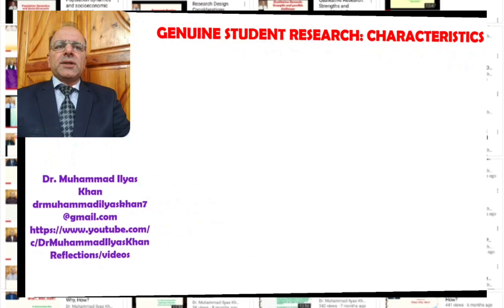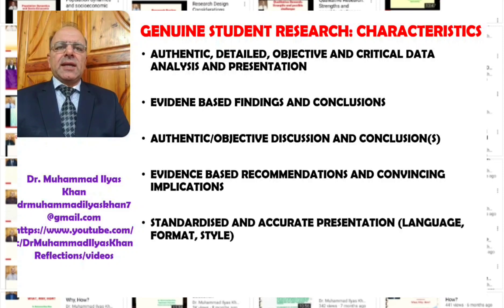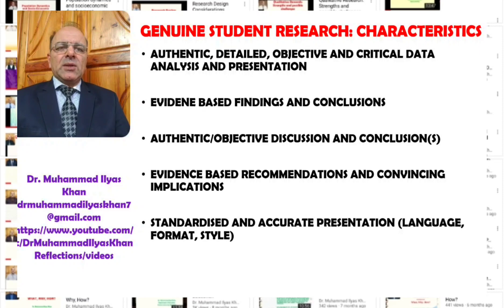Other important characteristics of genuine student research include authentic, detailed, objective, and critical data analysis and presentation. In many cases, data is partially presented or not critically analyzed, and in some cases data might be manipulated. It is very important that the data is authentic, the data analysis is detailed and objective — but it should also be critical, where conclusions are open to multiple interpretations.